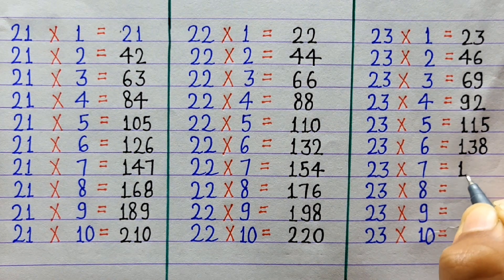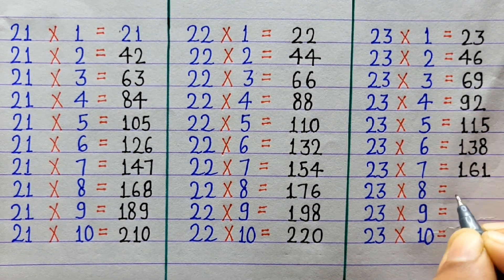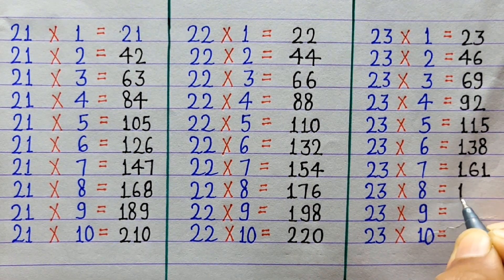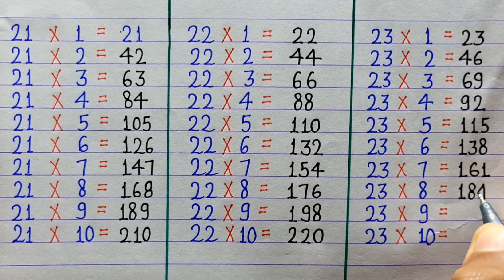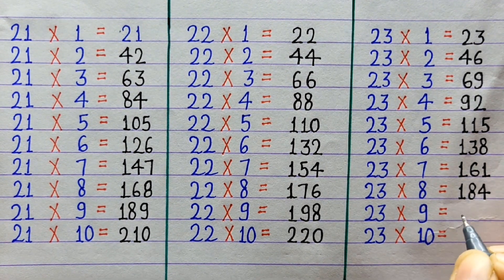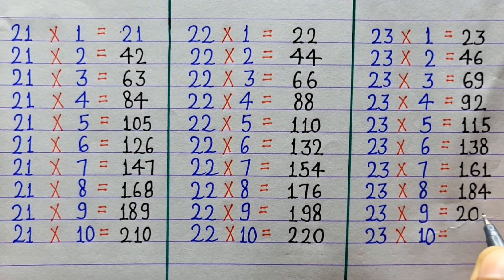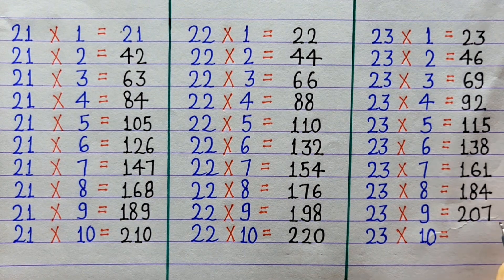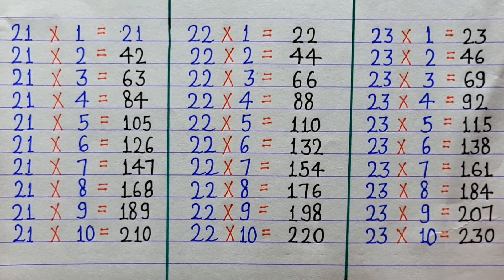23×7=161, 23×8=184, 23×9=207, 23×10=230.